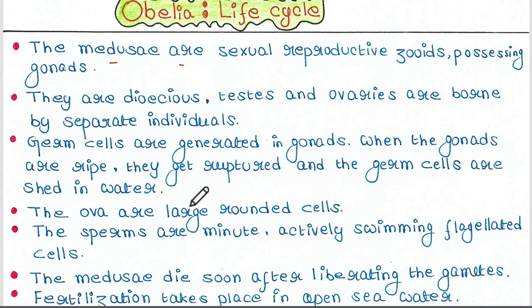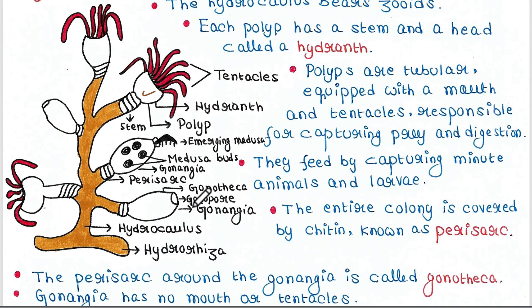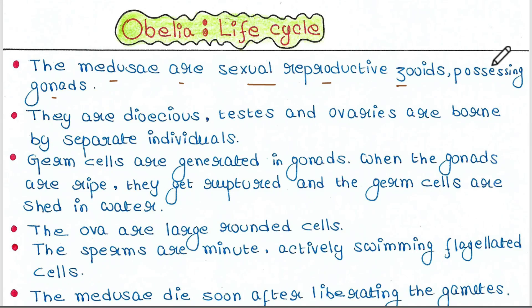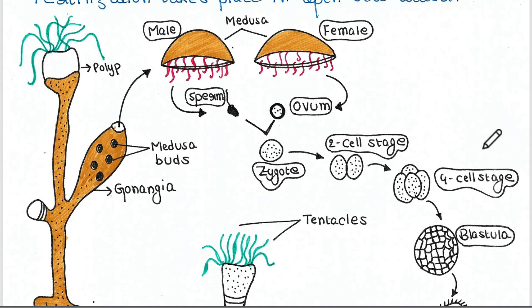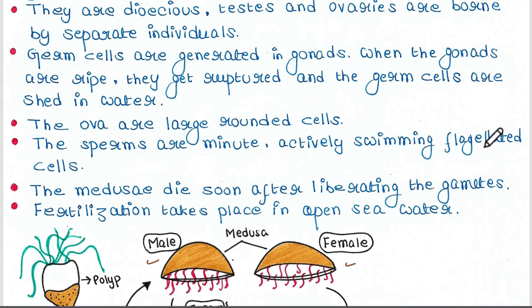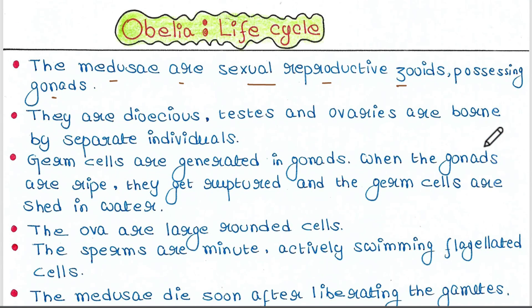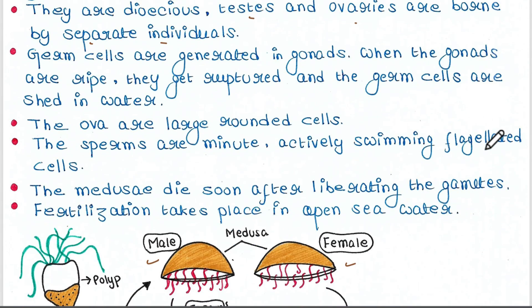The Medusae are actually sexual reproductive zooids and they possess gonads. They emerge from the Obelia colony, swim in the water, and here we have the male and the female Medusa. They are dioecious — testes and ovaries are borne by separate individuals, meaning male and female bodies are different.